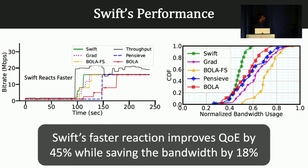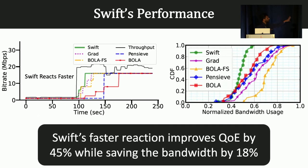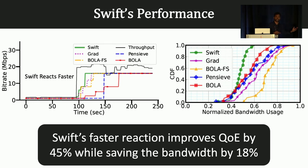Because of this fast reaction, Swift improves QoE by 45% compared to the next-best alternative, and also achieves bandwidth savings of up to 18%.